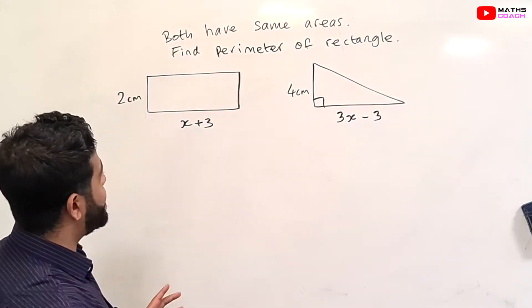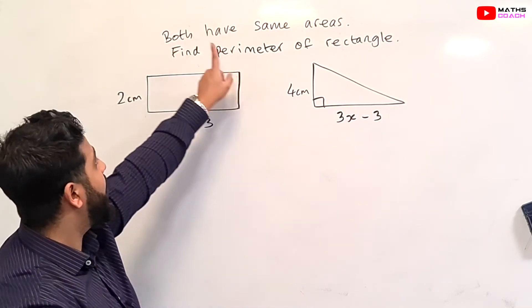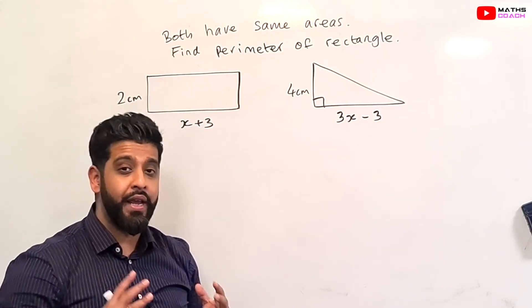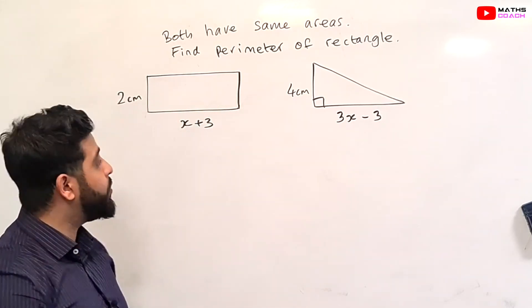On to our final question for this lesson. We are given two shapes, a rectangle and a triangle, and we are told that both have the same area. We have to find the perimeter of this rectangle. So where do we begin?